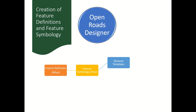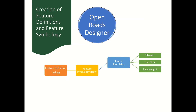Feature symbology determines how we need to show it — it might be in blue color, red color, etc. All display properties depend on feature symbology. In feature symbology there are two components: one is element template and the other is annotation group. In element template it is a combination of all level-related details in 2D and 3D — line style, what type of line style to use, and line weight. If you create these three and assign them to a single element template, it will automatically assign to the respective feature symbology, which is then linked with the feature definition.